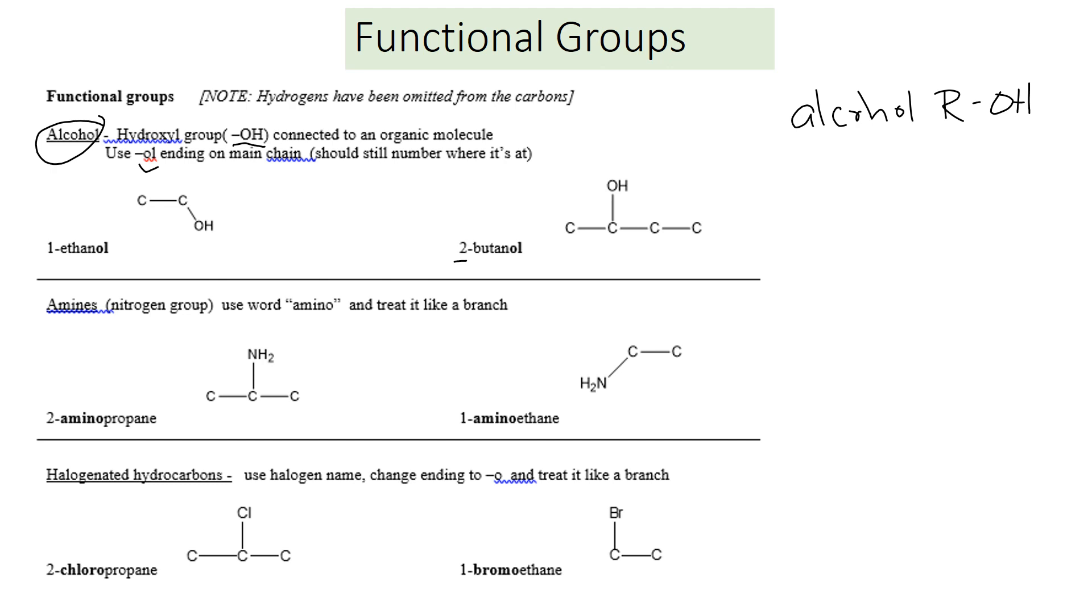The 2 tells you what carbon it's on, and the OL tells you it's an OH group. Those are alcohols. Your book has a really good table of these, table 18.7. I recommend you look at that while you go through this and recognize these groups.